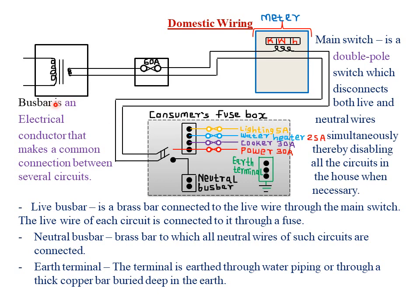The power circuit is used to charge mobile phones, televisions, and other electrical instruments. A bus bar is simply an electrical conductor that makes a common connection between several circuits. For example, the neutral bus bar is where all the neutral wires of the water heater, cooker, and power circuit are connected.